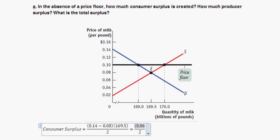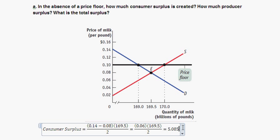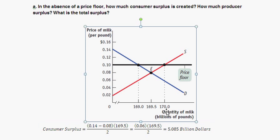So consumer surplus equals 0.06 times 169.5 divided by 2, which equals 5.085 billion dollars. The units work out: price is in dollars per pound and quantity is in billions of pounds, giving us billions of dollars.